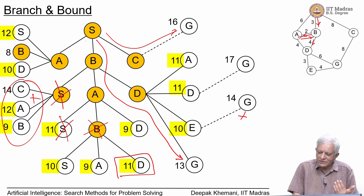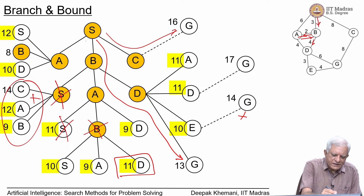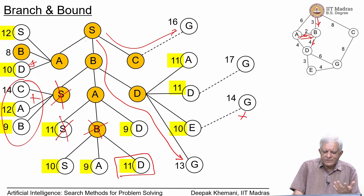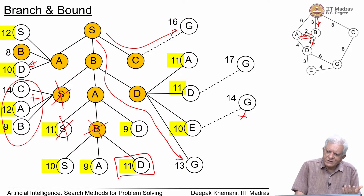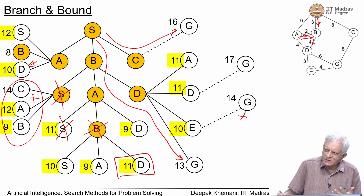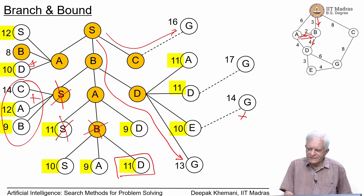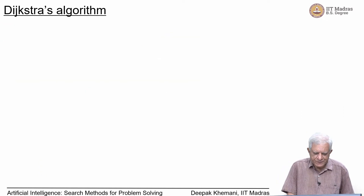The cheapest cost of going to D is from S to B to D: 3+4=7. So from S to B to D would be the cheapest way of reaching D. As we will see next, Dijkstra's algorithm, once it has found that the path to D costs 7, will simply prune all other possible paths — in fact, it does not even represent those other possible paths.